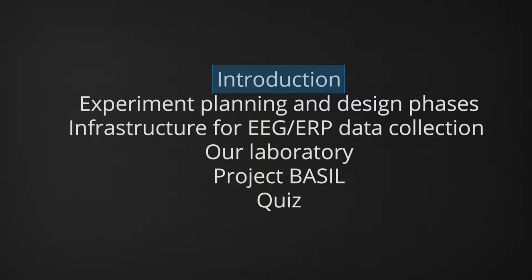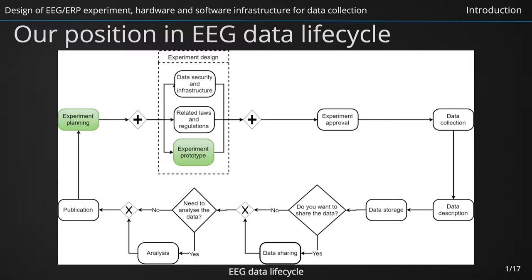In the first part of our tutorial, we introduced the whole EEG data life cycle that you can see in the picture. It describes the phases through which the EEG or event-related data pass during their life. In this part, we will focus on the initial phases: experiment planning and part of the experiment design phase. We will create an experiment prototype. Data security and related laws and regulations that have to be taken into account during the experimental design phase will be described later in the third part of our tutorial.